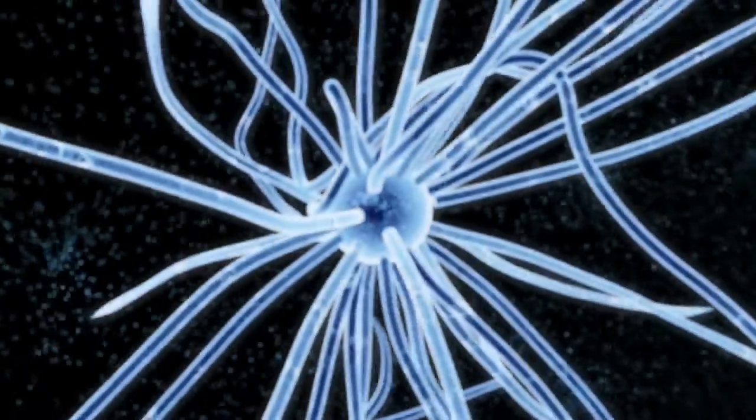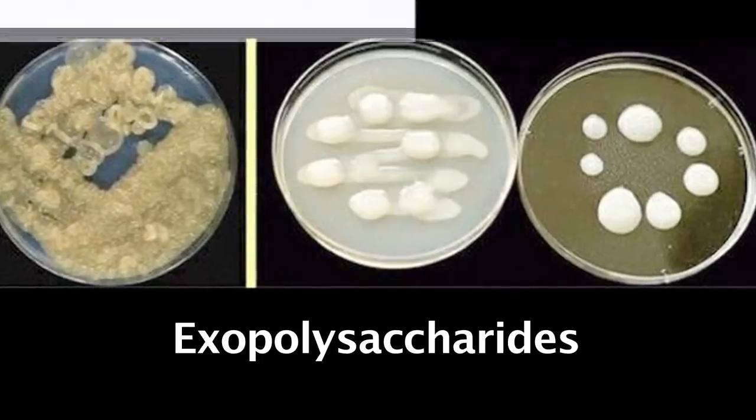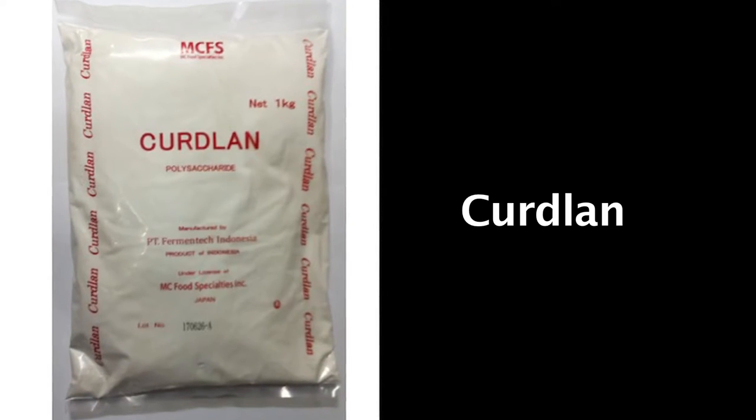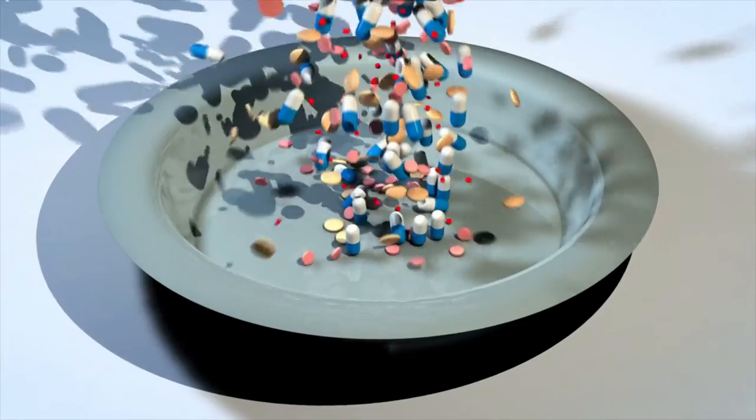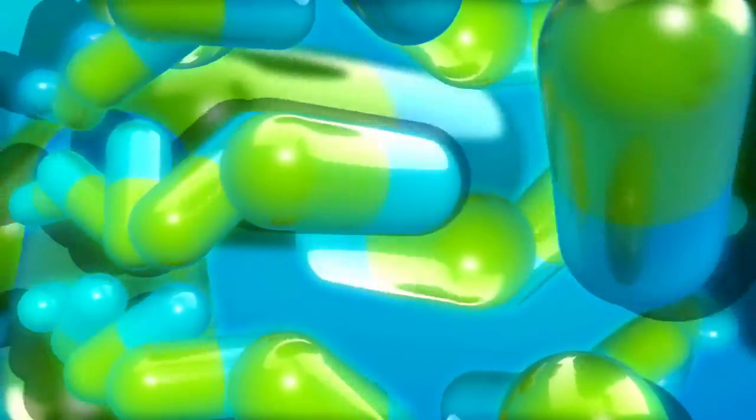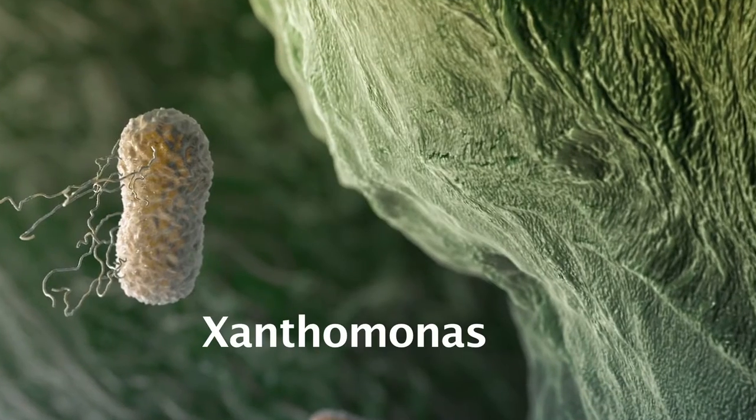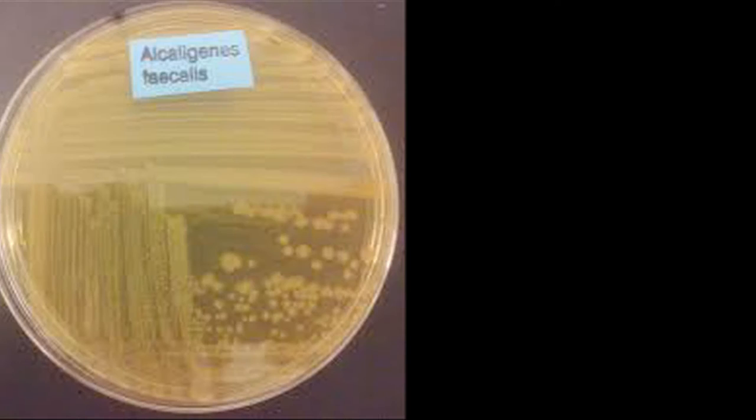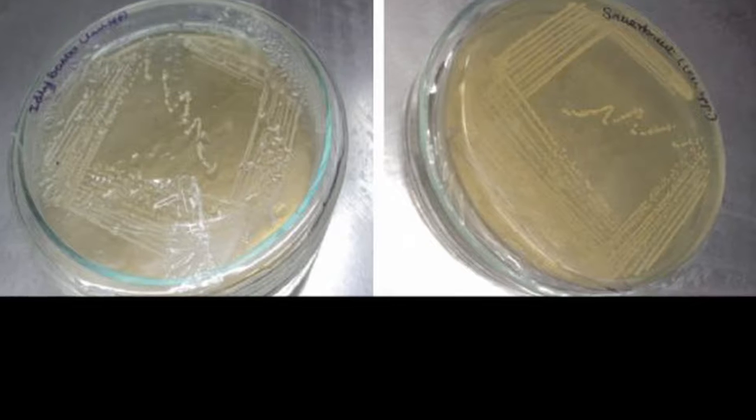Most bacteria are used as industrial producers of exopolysaccharides. Xanthan, gellan, curdlan and dextran are the well-known industrially produced polysaccharides and they are synthesized by the species of Xanthomonas, Sphingomonas, Alcaligenes and Leuconostoc.